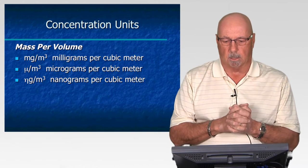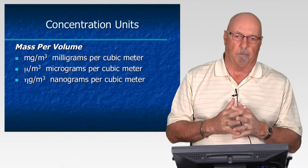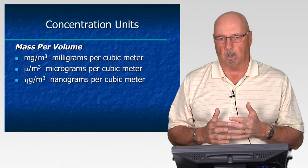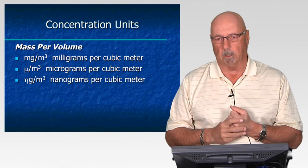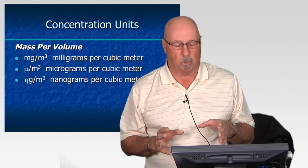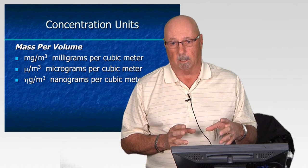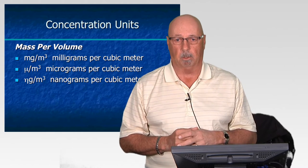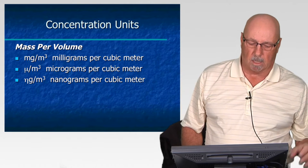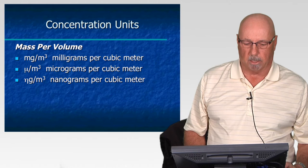Regarding concentrations and units of measurement: when talking about gases, vapors, dusts, fumes, and mists, the units of measurement are milligrams of the substance per cubic meter of air. If the quantity is very low, we could use micrograms per cubic meter, or even nanograms. Another unit of measurement is parts per million — particles of that substance per million parts of air.